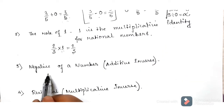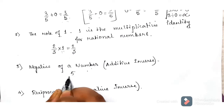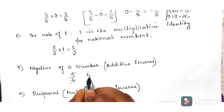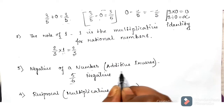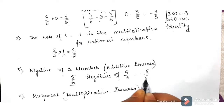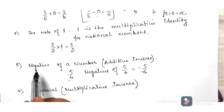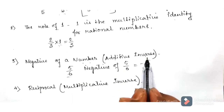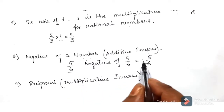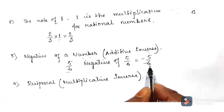Next, we have the negative of a number, which is also called the additive inverse. If I take 5 by 6, what will be the negative of this number? The negative of 5 by 6 will be minus 5 by 6. To find the negative of any number, we simply change the sign.